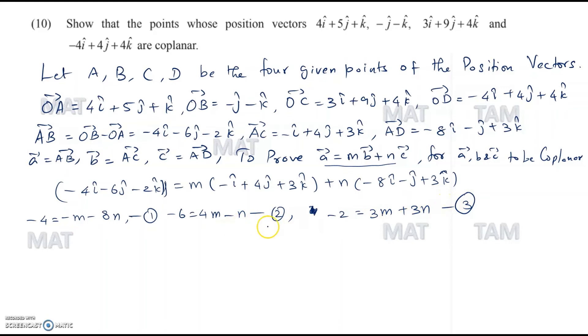Now we can see that if we multiply the second equation with 3 and add it with equation 3, multiplying 2 times 3, we get minus 18 is equal to 12M minus 3N. If we add these two, we will get minus 20 is equal to 15M. Therefore, our M is equal to minus 20 by 15, which is equal to minus 4 by 3.